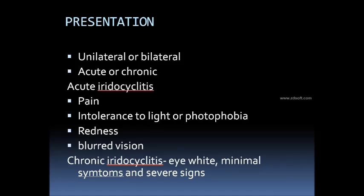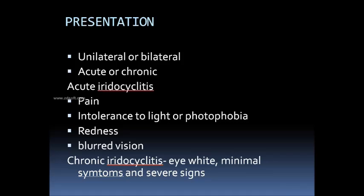The presentation of anterior uveitis can be unilateral or bilateral, and acute or chronic. Acute iridocyclitis is characterized by pain, redness, blurred vision, and the very characteristic symptom of intolerance to light, or photophobia. In contrast, patients with chronic iridocyclitis may be minimally symptomatic, with the eye appearing totally white and quiet.